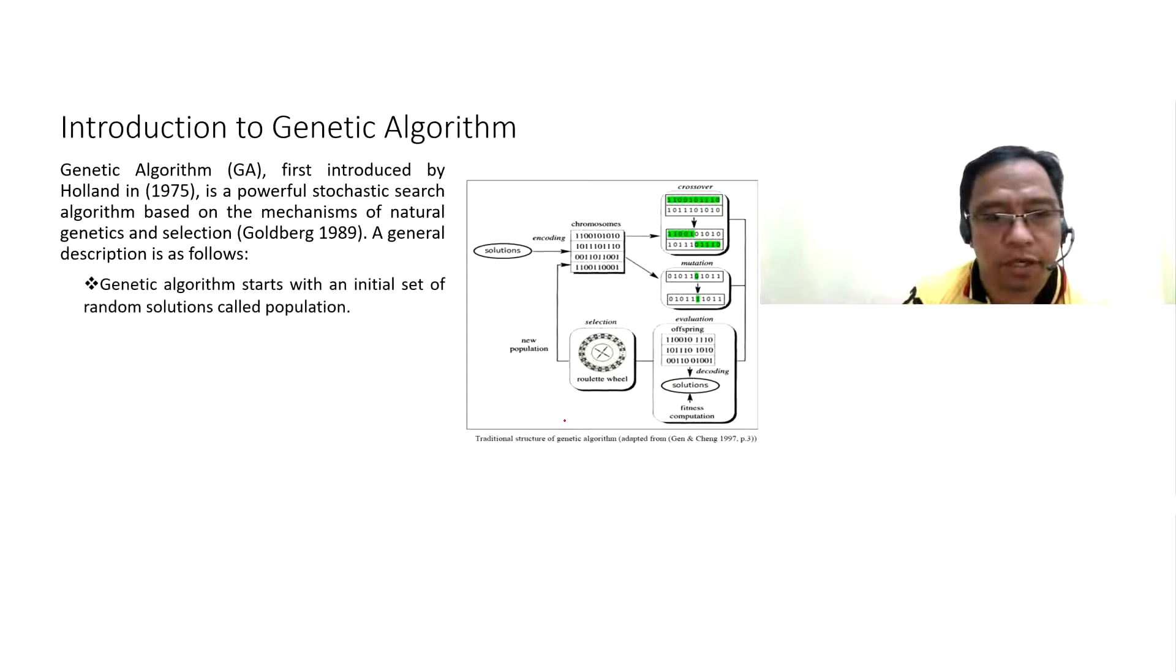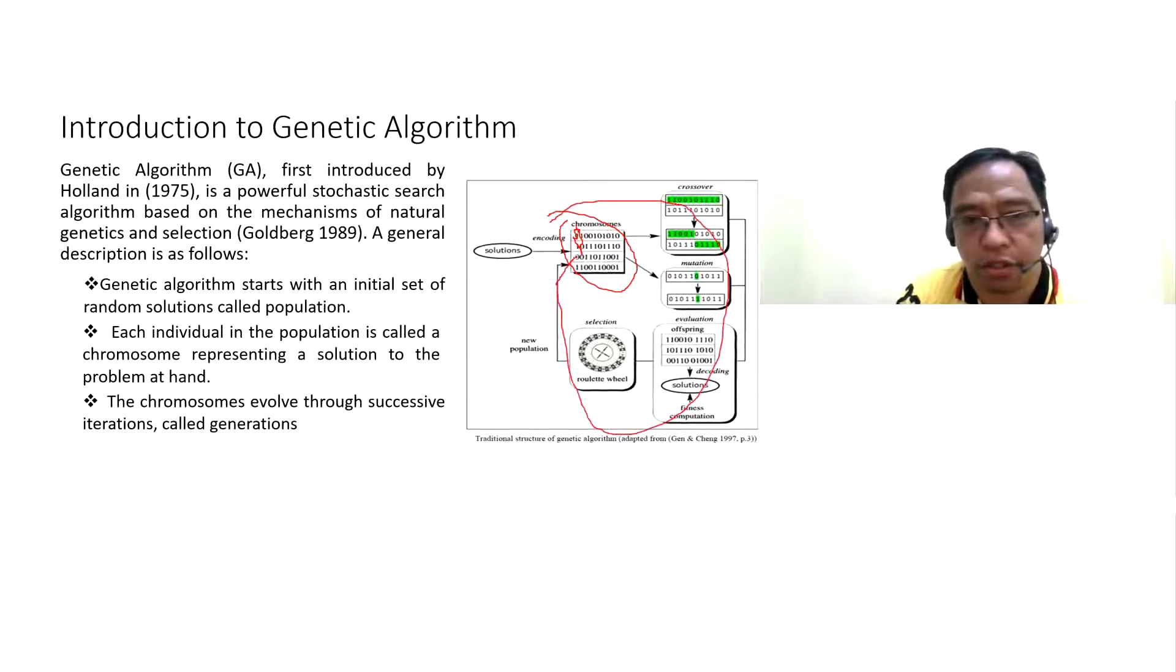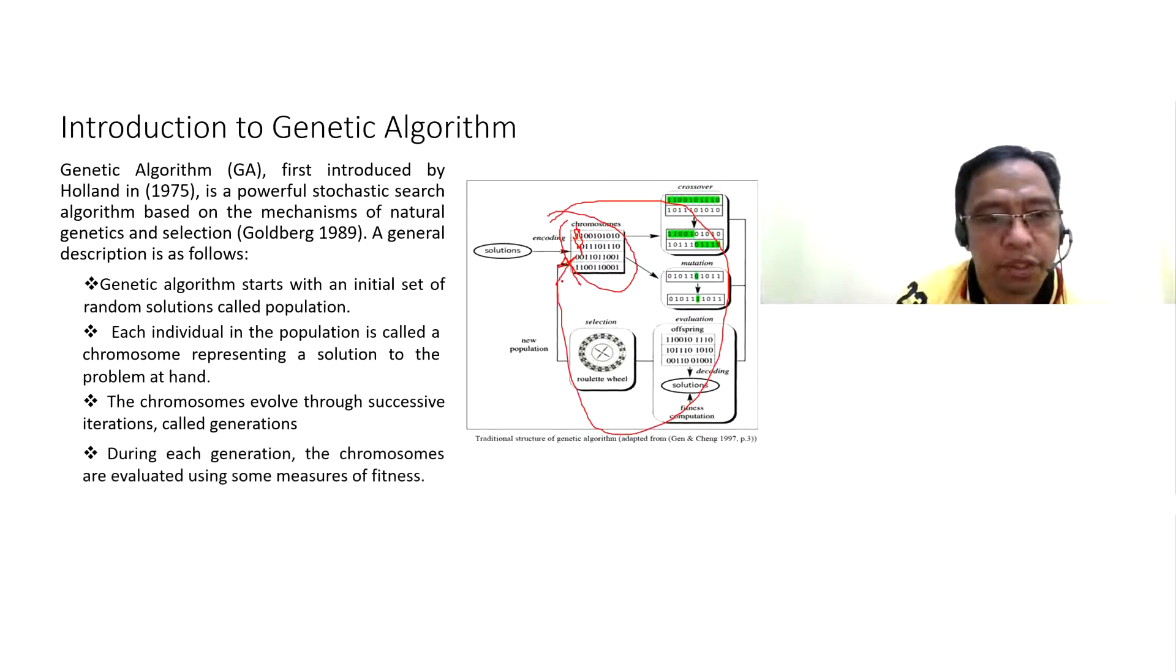Genetic algorithm starts with an initial set of random solutions called a population. Each individual in the population is called a chromosome representing a solution to the problem at hand. The chromosomes evolve through successive iterations called generations.